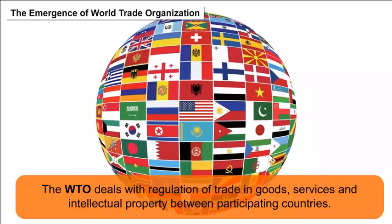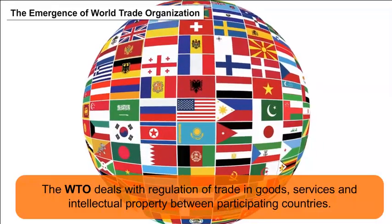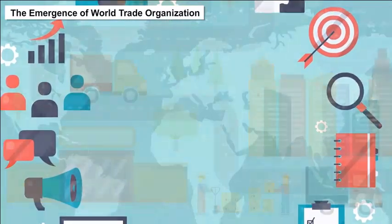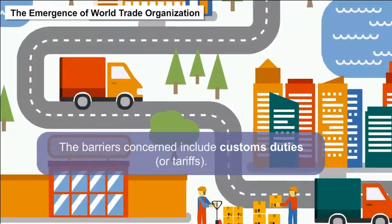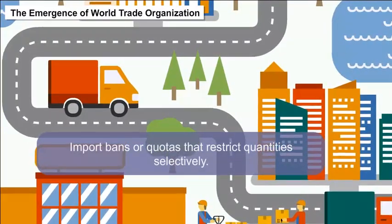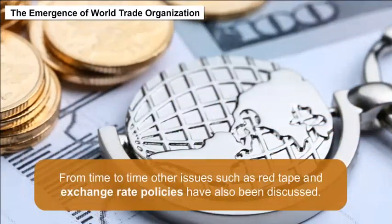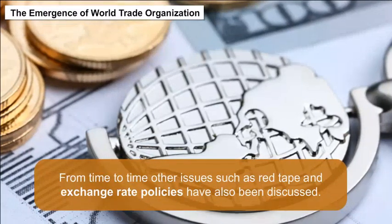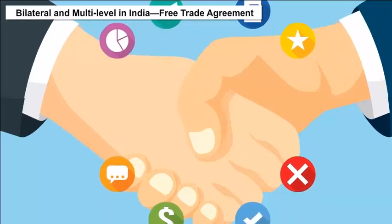Lowering trade barriers is one of the most obvious means of encouraging trade. The barriers concerned include customs duties or tariffs and measures such as import bans or quotas that restrict quantities selectively. From time to time, other issues such as red tape and exchange rate policies have also been discussed.